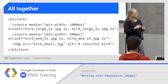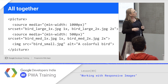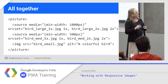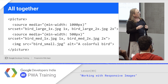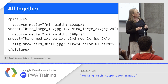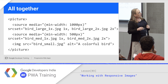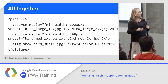Putting it all together using picture and source: you have picture, source with a media query for different resolutions, another source with a media query also at different resolutions, and a fallback to a regular image.